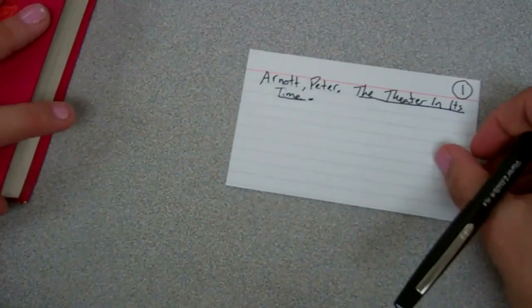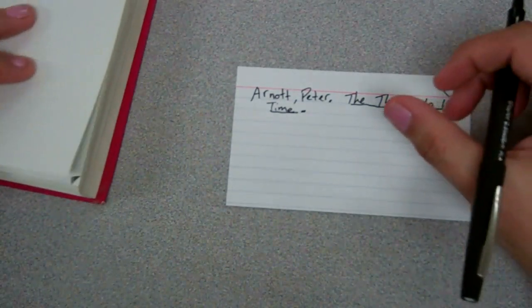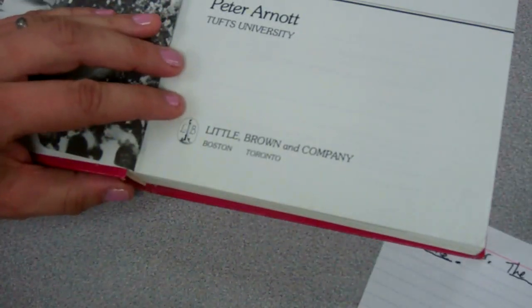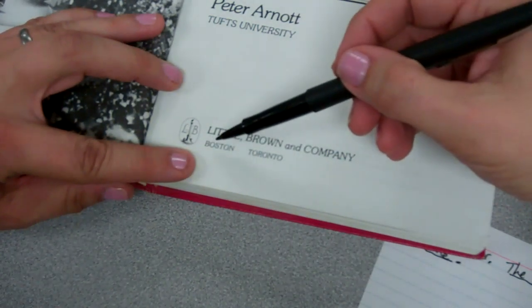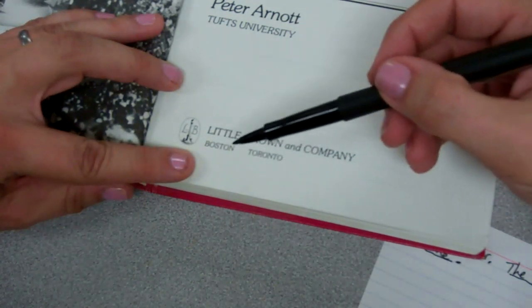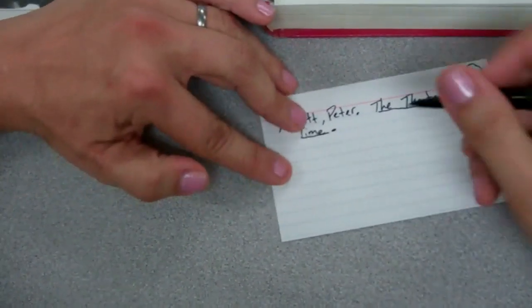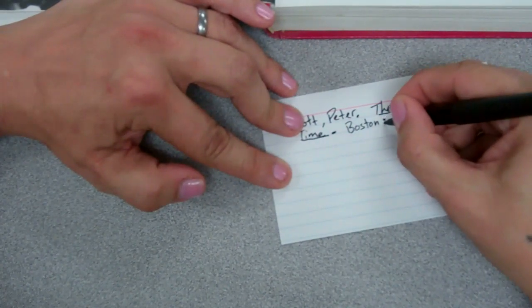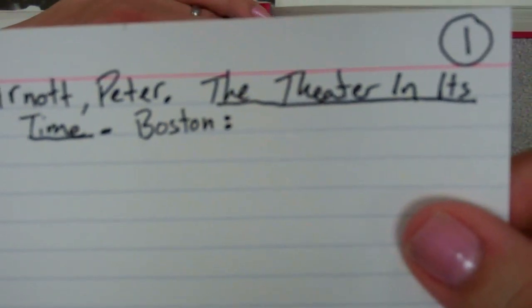After the title, you have to put the city that the book was published in. You have to find that by going to the title page. You see here, it has the publishing company and it has two cities: Boston and Toronto. Put the first city that it says. So I'm going to put Boston, and then a colon — the two dots.